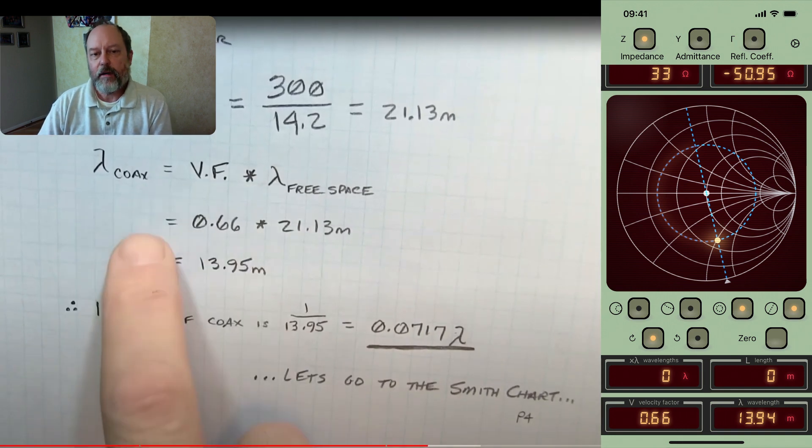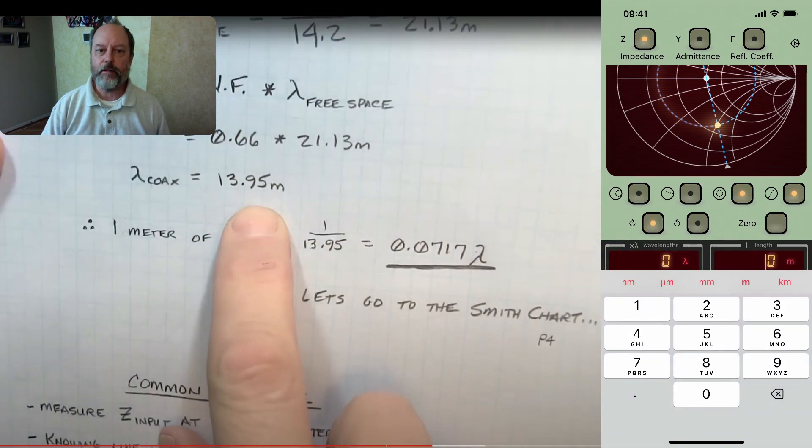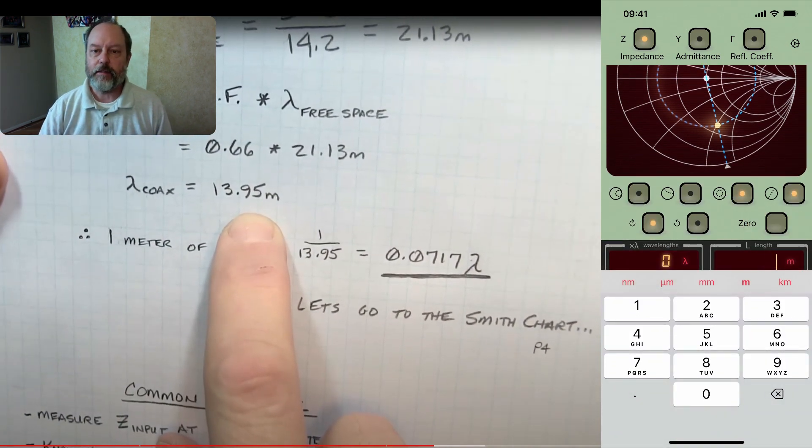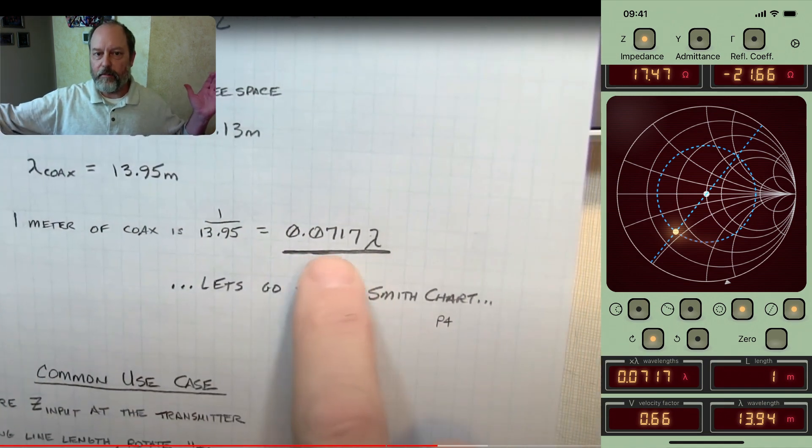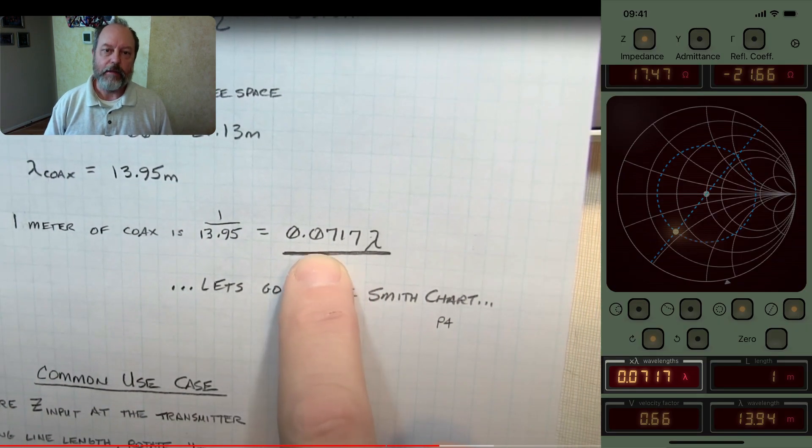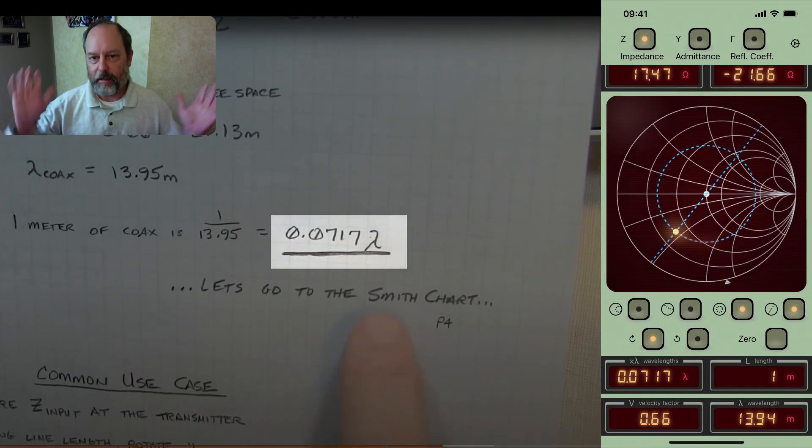And now Alan has one meter of coax in his video, so we're interested in that. So we'll put in one meter into the length field. And you can see that the app calculates that the number of wavelengths associated with that one meter of length is 0.0717 wavelengths. So that matches pretty much exactly what Alan had.